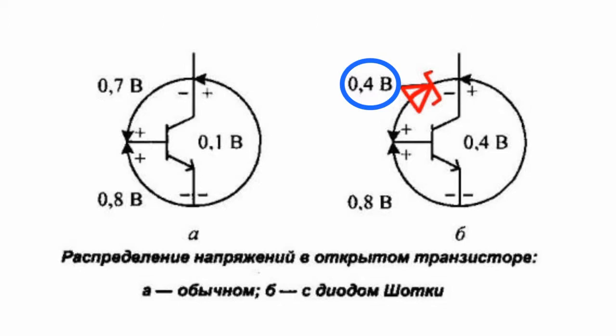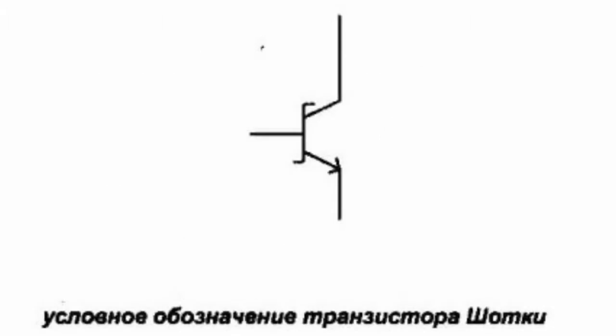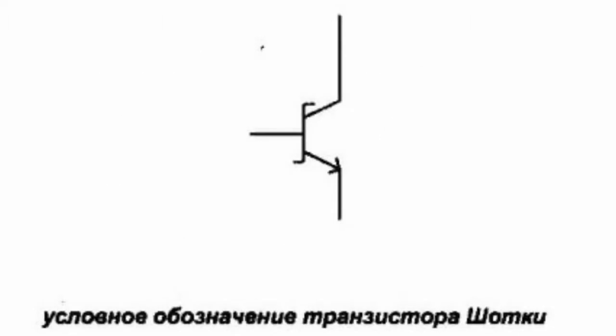This helps eliminate the shutdown delay and the speed increases by 3 to 5 times. A transistor with Schottky diode between the base and the collector is called the Schottky transistor.